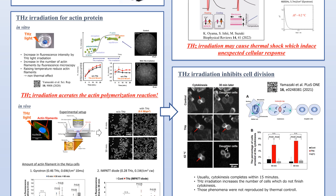In the experiment, we observed the actin proteins aggregate to form filament structures, and we observed filament actin by fluorescence microscopy. In the in vitro experiment, we observed the actin filamentation reaction with and without terahertz irradiation. After 30 minutes of irradiation, we found that the number of actin filaments increased. This phenomenon was not reproduced by simply changing the sample temperature, so we concluded that terahertz irradiation accelerated actin polymerization in living cells.